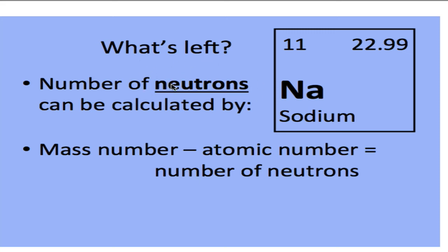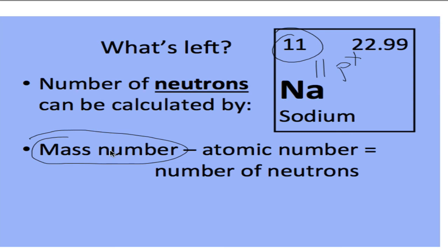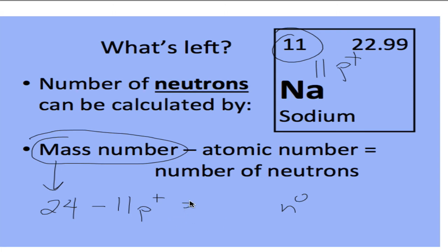To figure out the number of neutrons, there's nothing in the element square that directly tells us, so we use the atomic number (number of protons) and the mass number, which I have to give you. For example, if the mass number for a sodium isotope is 24, we subtract the number of protons: 24 minus 11 equals 13 neutrons. So this particular sodium isotope with a mass number of 24 has 13 neutrons.